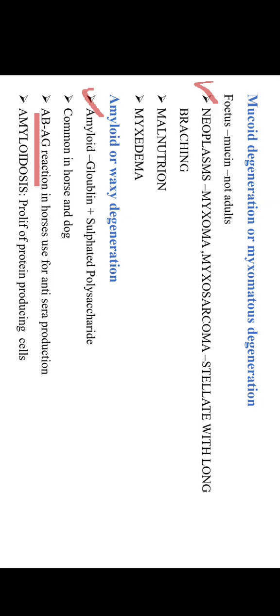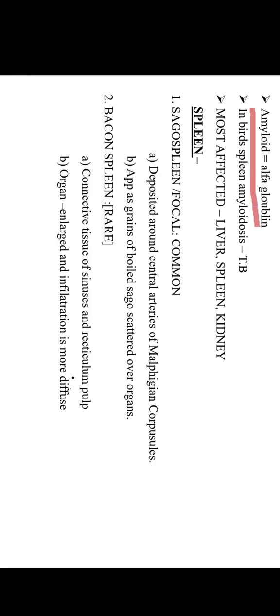The next degeneration is amyloid degeneration, also known as amyloid infiltration or waxy degeneration. Amyloid is a globulin along with sulfated polysaccharide. This degeneration is very common in horses and dogs. In horses used for production of anti-sera, antibody-antigen reaction leads to amyloid infiltration. Amyloid degeneration means proliferation of protein-producing cells; amyloid is a type of protein, specifically alpha globulin. In birds, this degeneration is seen in TB. The most affected organs are liver, spleen, and kidney.